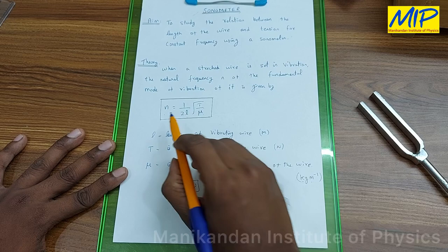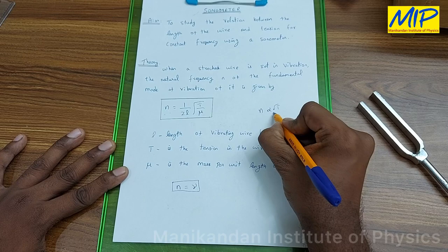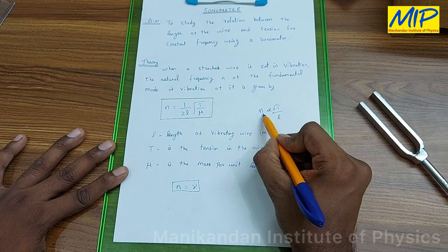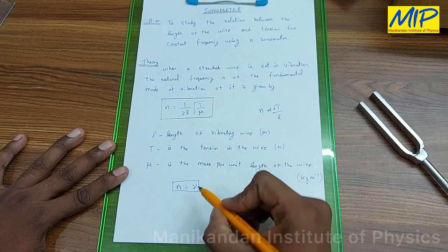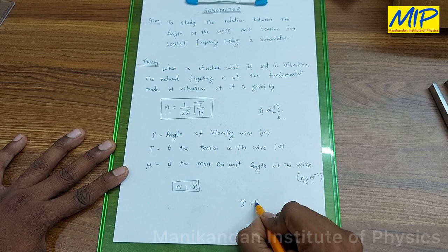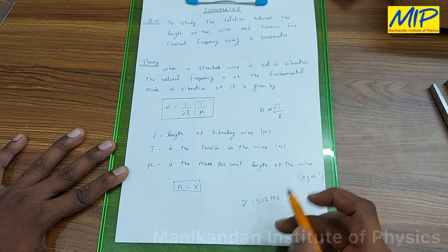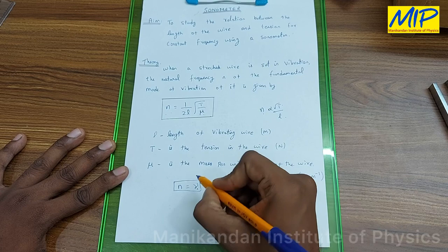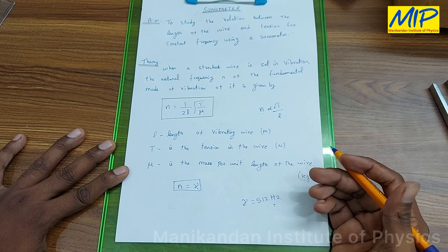So n is directly proportional to tension and inversely proportional to length. Since μ is a constant, the frequency of the sonometer purely depends upon tension and length. I have a tuning fork with frequency 512 hertz, which is fixed. When the sonometer frequency exactly matches this frequency, the amplitude of the string should be maximum — this condition is called the resonance condition.